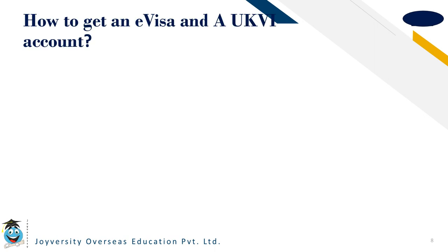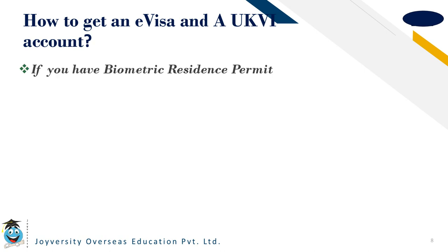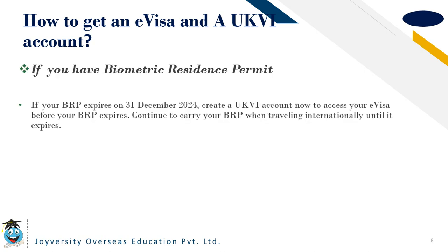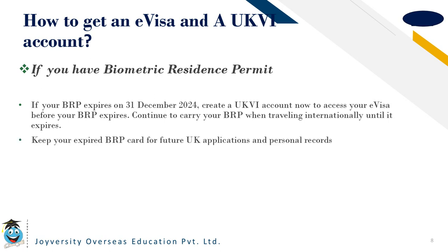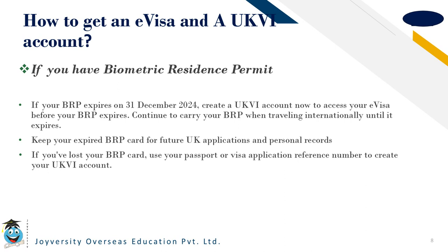How to get an e-visa and a UKVI account — this is for those who have a biometric residence permit (BRP). If your BRP expires on 31 December 2024, create a UKVI account now to access your e-visa before your BRP expires. Continue to carry your BRP when travelling internationally until it expires. Keep your expired BRP card for future UK applications and personal records. If you have lost your BRP card, use your passport or visa application reference number to create your UKVI account.